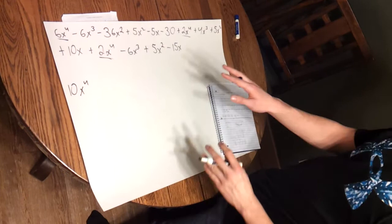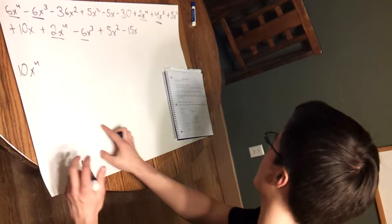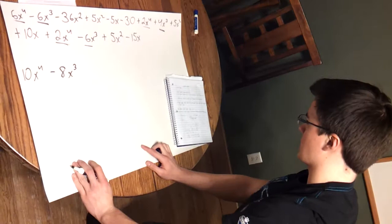Now we're going to combine all terms with x with an exponent of 3. There's 6x to the 3rd, 4x to the 3rd, and negative 6x to the 3rd. When you combine those 3 together you'll get a negative 8x to the 3rd.